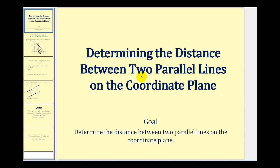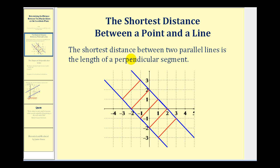Welcome to a lesson on determining the distance between two parallel lines on the coordinate plane. The shortest distance between two parallel lines is the length of a perpendicular segment, as we see here in red. If the segment isn't perpendicular to both parallel lines, then it would not be the shortest distance.